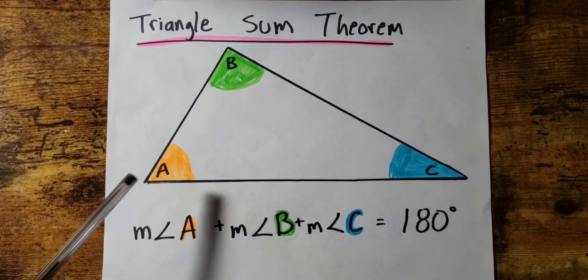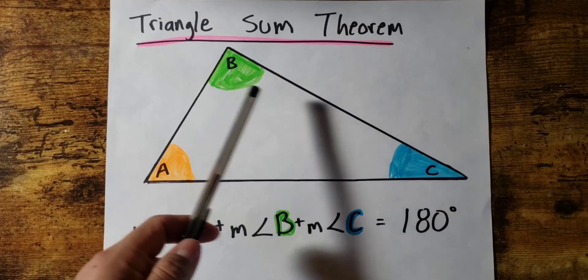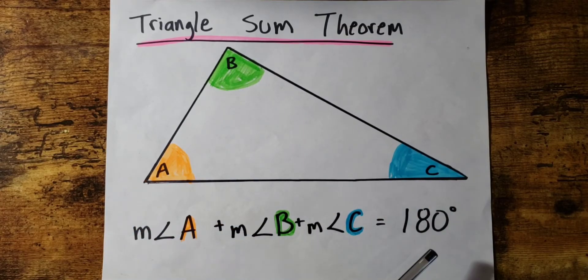That is, if you add up the measurement of angle A plus the measurement of angle B plus the measurement of angle C, you're going to get 180 degrees.